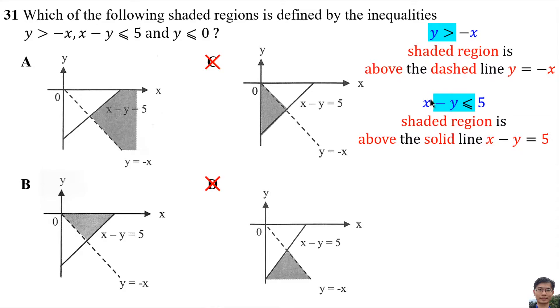If there is no negative, only y less than or equal, it means below the solid line. But if there is a negative, it becomes above.